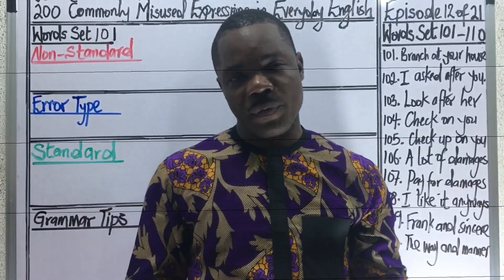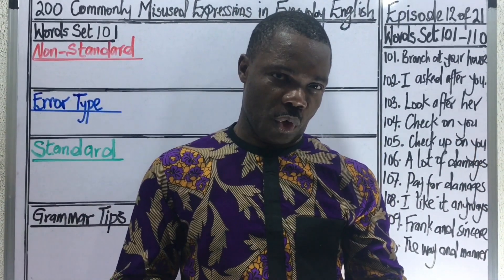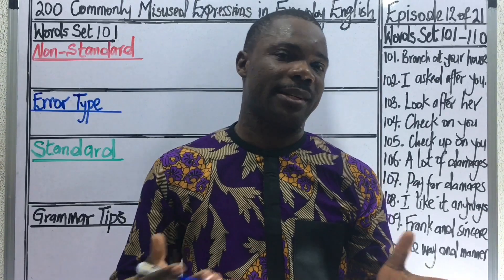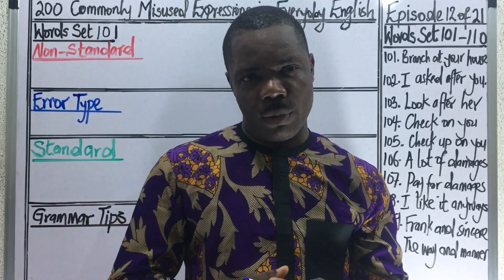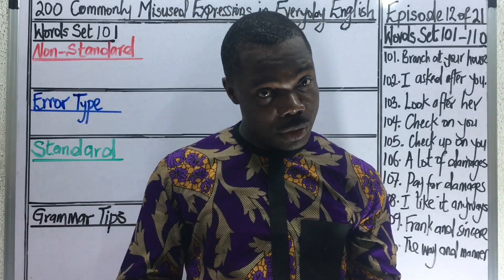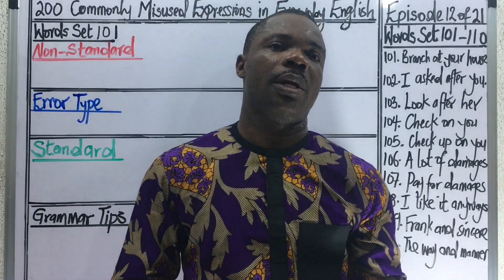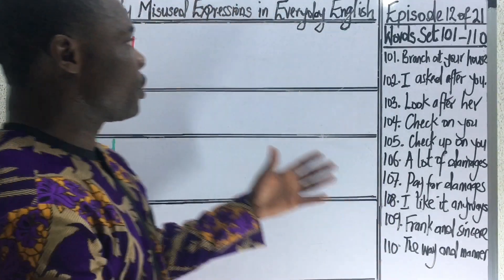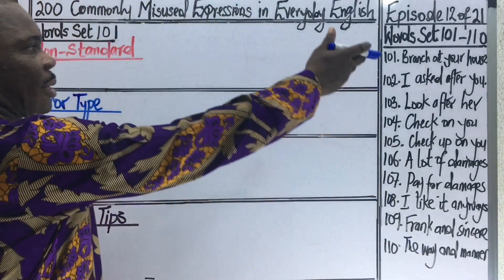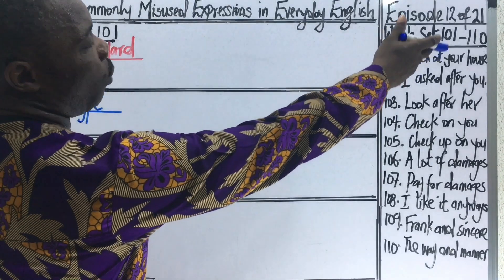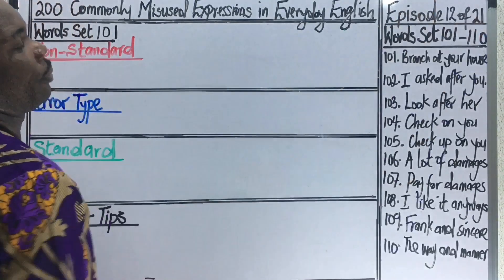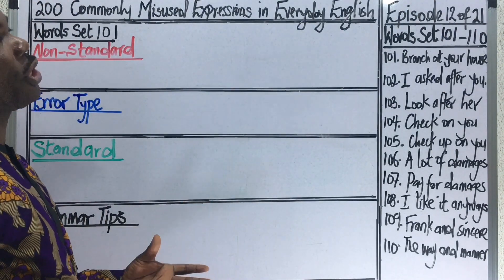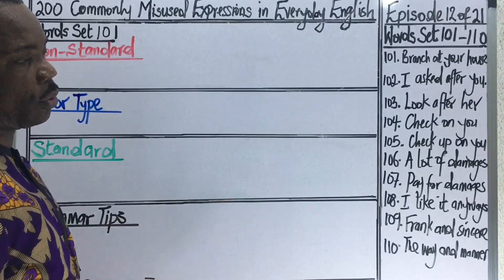Welcome to the twelfth episode of our 21-in-1 video series entitled 200 Commonly Misused Expressions in Everyday English. In today's episode, we shall be considering word sets 101 to 110.